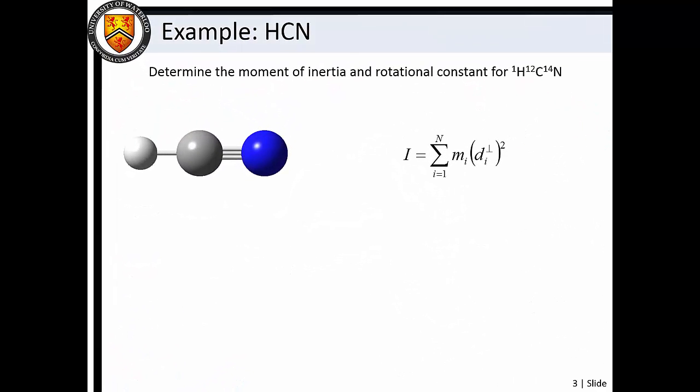Let's calculate the moment of inertia and rotational constant for hydrogen cyanide. Since HCN is a linear molecule, the I_B and I_C moments of inertia are equal, and I_A is zero.